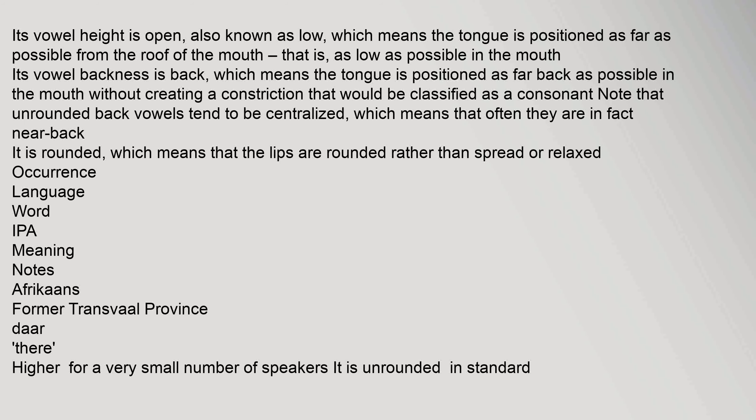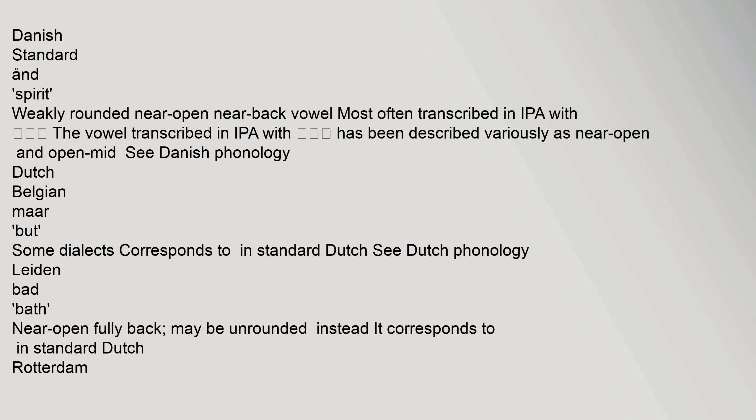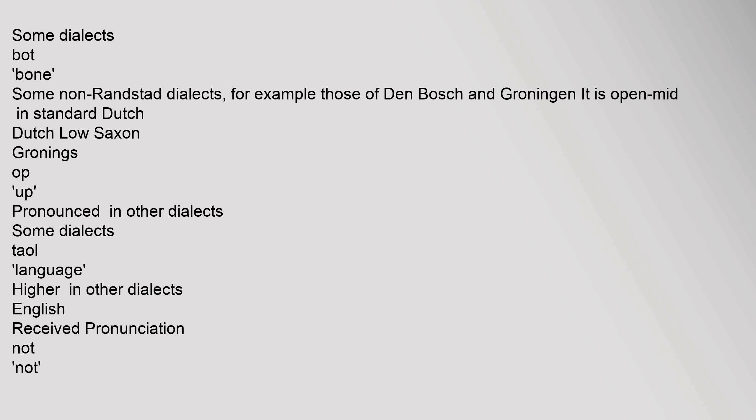Occurrence by language: In Afrikaans, for a very small number of speakers it is unrounded; in standard Afrikaans see Afrikaans Phonology. In Assamese and Assyrian Neo-Aramaic, it may be realized variably. In Catalan Majorcan, it is typically transcribed in IPA with the relevant symbol; see Catalan Phonology. In Danish Standard, it is a weakly rounded near open near back vowel, most often transcribed in IPA accordingly, and has also been described as near open and open mid; see Danish Phonology. In Dutch Belgian varieties, some dialects correspond to the standard Dutch realization, and in Leiden it may be unrounded and fully back.